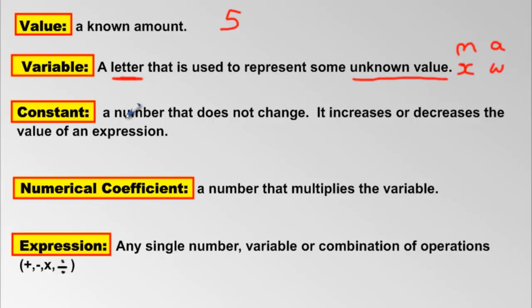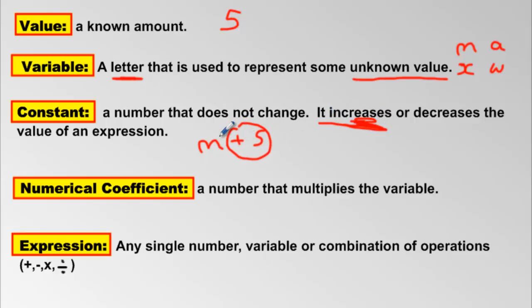A constant is a number that does not change. It increases or decreases the value of an expression. For example, if I start with my mystery amount of marbles and I tell you I'm adding five more, that would be: take the mystery marbles and add five. That amount, because it is increasing the amount of marbles, is called a constant. If it was minus five, it would be decreasing, and it would still be a constant.